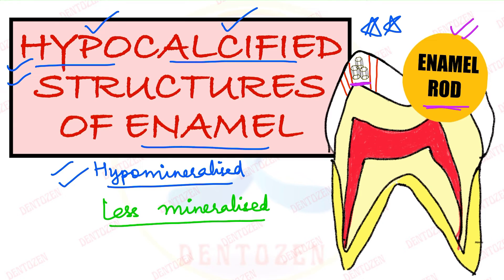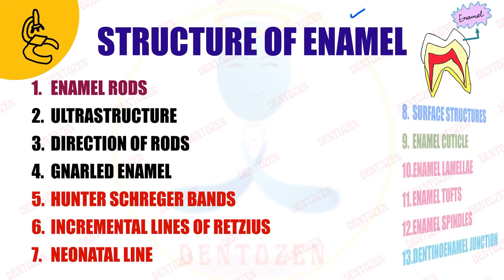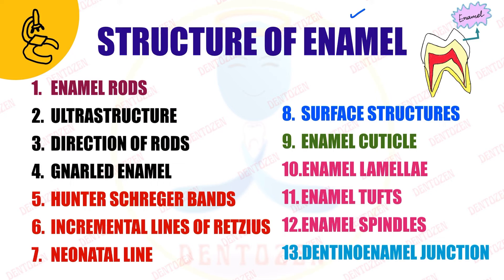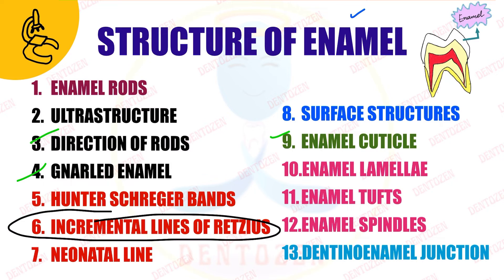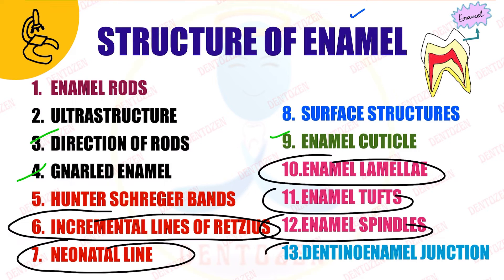When we look at enamel under the microscope, we can see all these structures, but not all of them are hypocalcified. The ones that are hypocalcified include: incremental lines of Retzius, neonatal line, enamel lamellae, enamel tufts, spindles, and the dentino-enamel junction. Let's see how to write this for your exam.